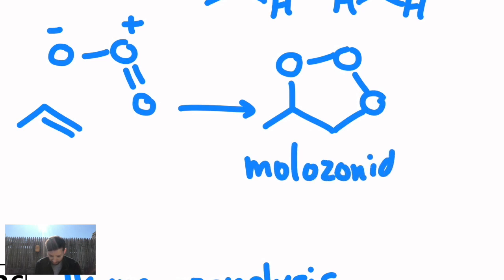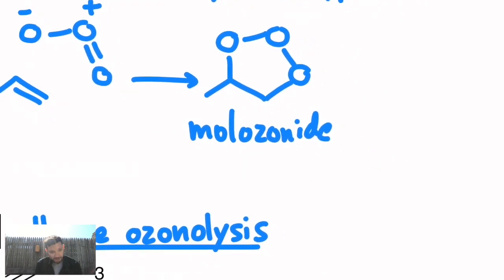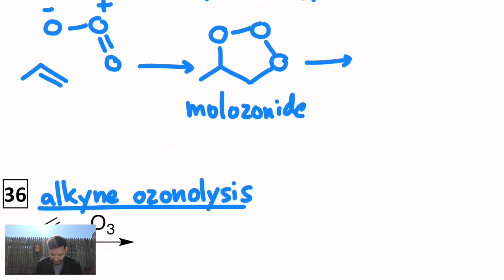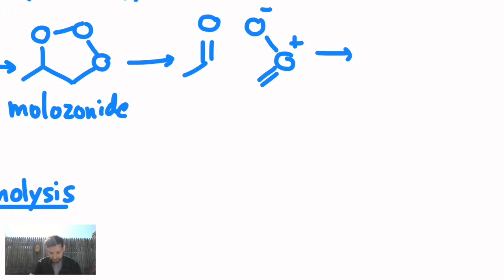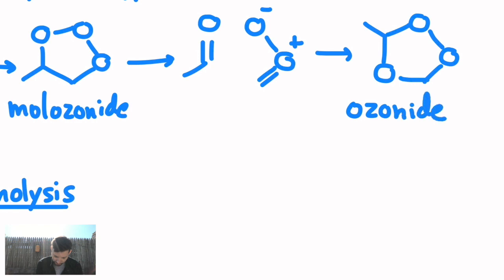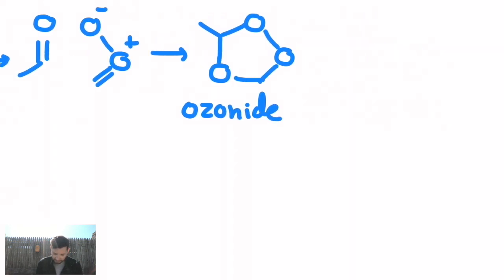This is called a melosinide. Remember, chemistry is also a language class. Melosinides are not very stable on their own. And then they collapse and turn into what looks like this, two separate molecules. Again, you go back and put in the curved arrows. You can pause this and do it along the way, or just go at the end and try it. And then those two molecules that are separate from each other actually recombine. And you get a different five-membered ring that looks like this. This is called an ozonide.